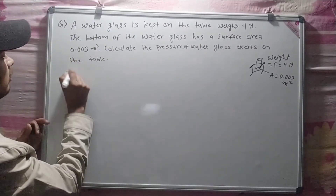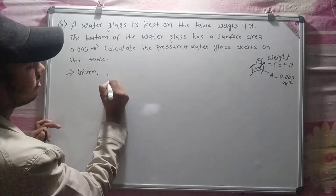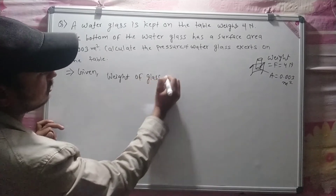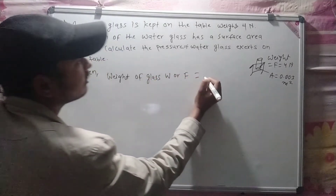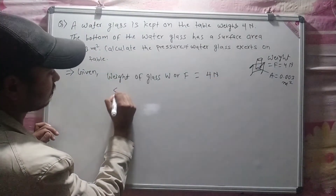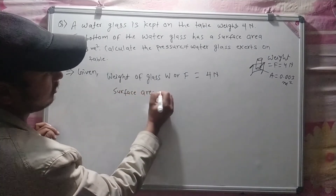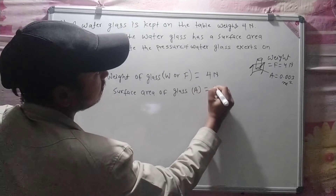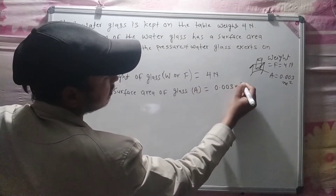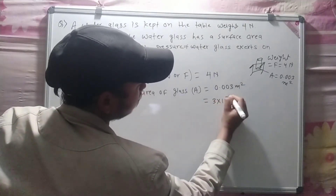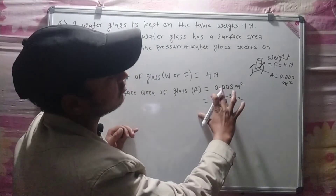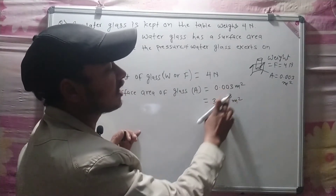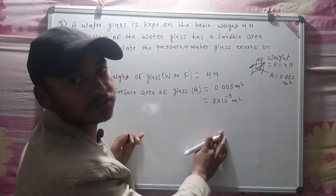Using the formula, pressure P = F divided by A. The weight of the glass F = 4 N, and the surface area A = 0.003 meter square, which is 3 × 10 to the power minus 3 meter square.